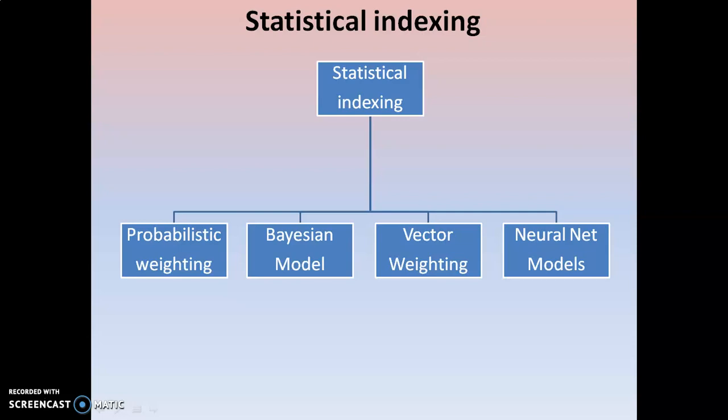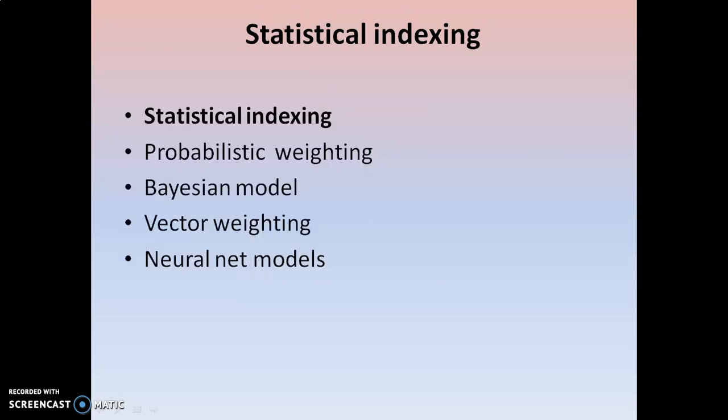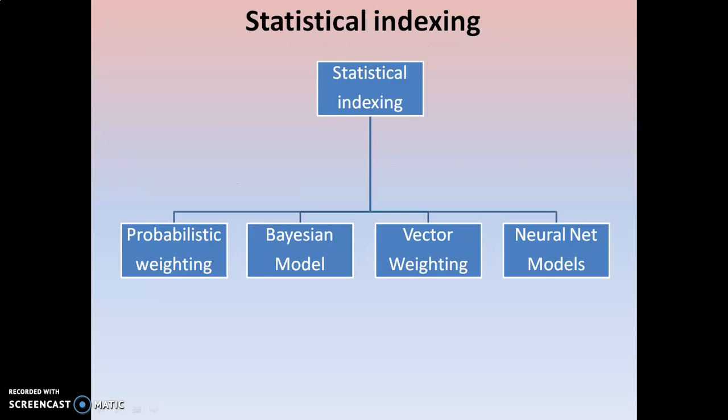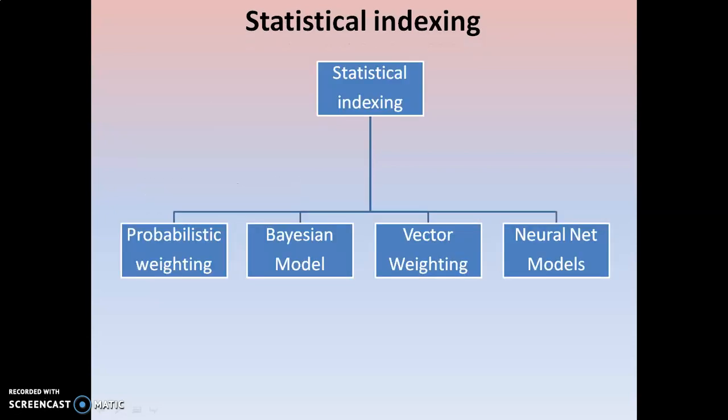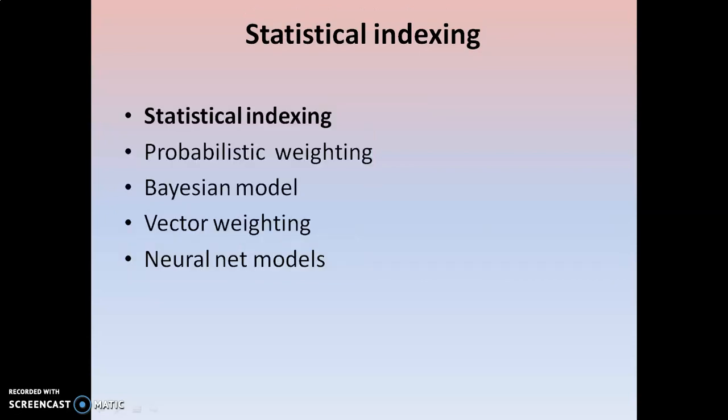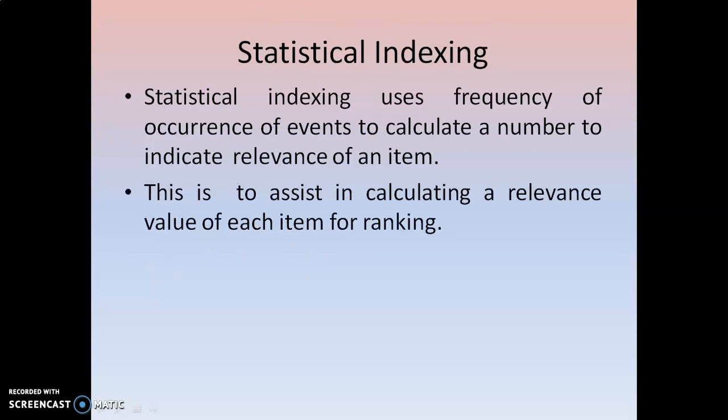Statistical indexing is again divided into 4 different types: probabilistic weighting, Bayesian model, vector weighting, and neural net models. These are the 4 types that statistical indexing is divided into. I have listed them here, and in the previous slide I gave them in the form of a hierarchy. Now we are going to see what is the meaning of statistical indexing.